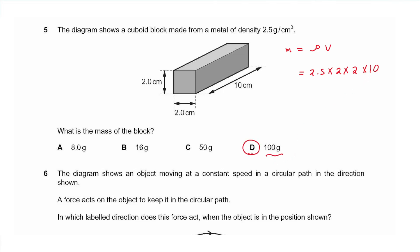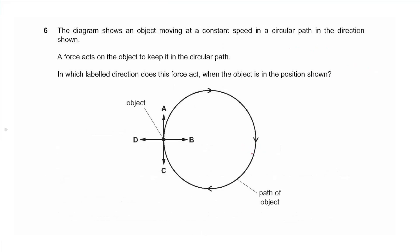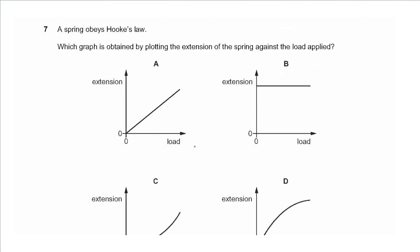Question 6 shows an object moving at constant speed in a circular path. A force acts on the object to keep it in a circular path. In which direction does this force act when the object is in the position shown? This force is called the centripetal force and always acts towards the center, so we choose B.